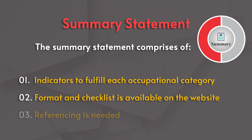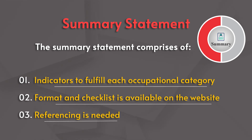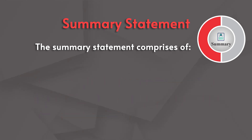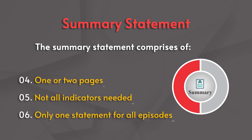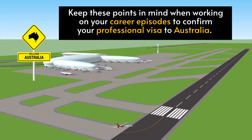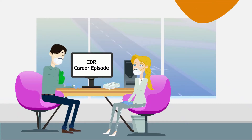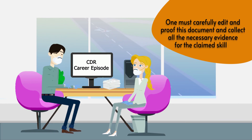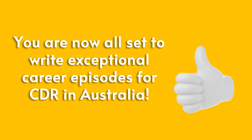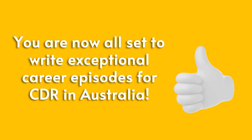You should write a detailed summary of all the career episodes. Check as many indicators provided in the assessment for your choice of engineering profession in Australia. Keep these points in mind when working on your career episodes to confirm your professional visa to Australia. Edit and proofread your document carefully before submission. Make sure all supporting documents are with you and in order. Write exceptional career episodes for your CDR to get a sure shot selection to Engineers Australia.